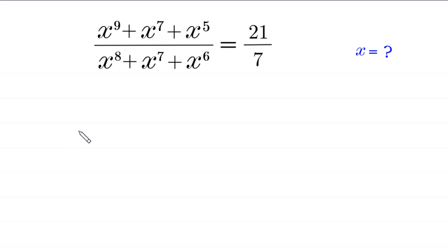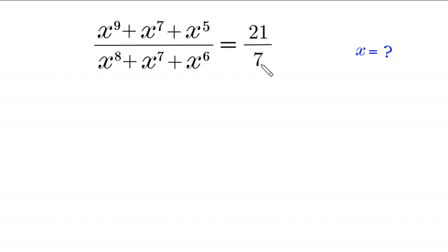Hello everyone, you are welcome. Today we solve this very nice algebra equation: (x⁹ + x⁷ + x⁵) divided by (x⁸ + x⁷ + x⁶) is equal to 21 over 7. Our job is to find all possible values of x.